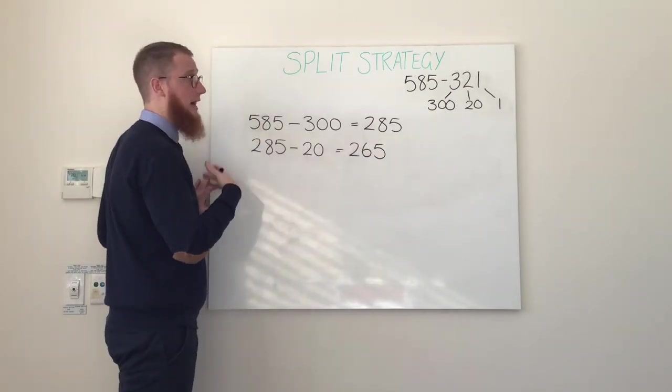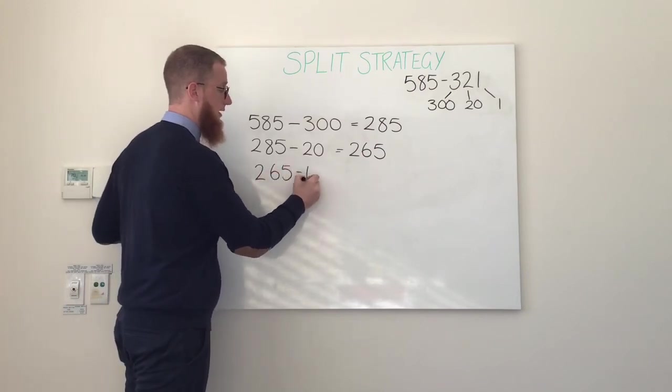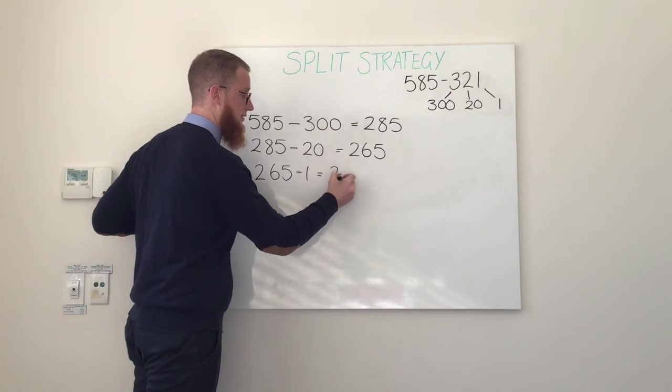Our final step: take away our ones. 265 minus 1 is 264.